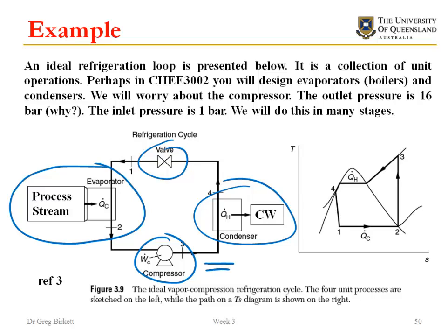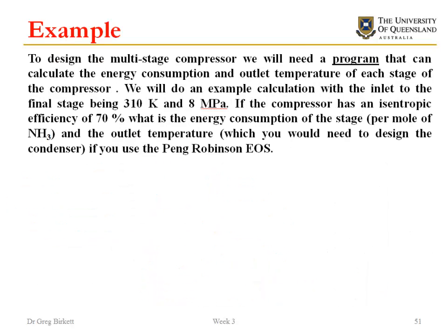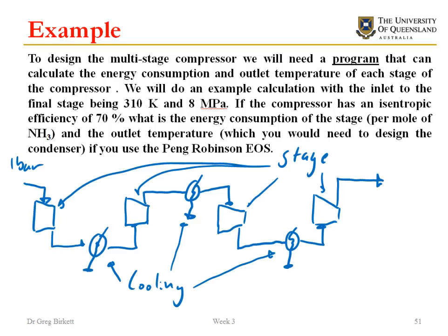In this compressor here we're compressing gases from 1 bar all the way up to 16 bar. To increase the pressure by that amount it's actually difficult, impossible to do in a single stage. So what we have instead is a multiple stage compressor where we have our gas coming in at 1 bar and then it goes through 1 compression stage, 2 compression stages, 3 compression stages, 4 compression stages until it comes out at 16 bar.